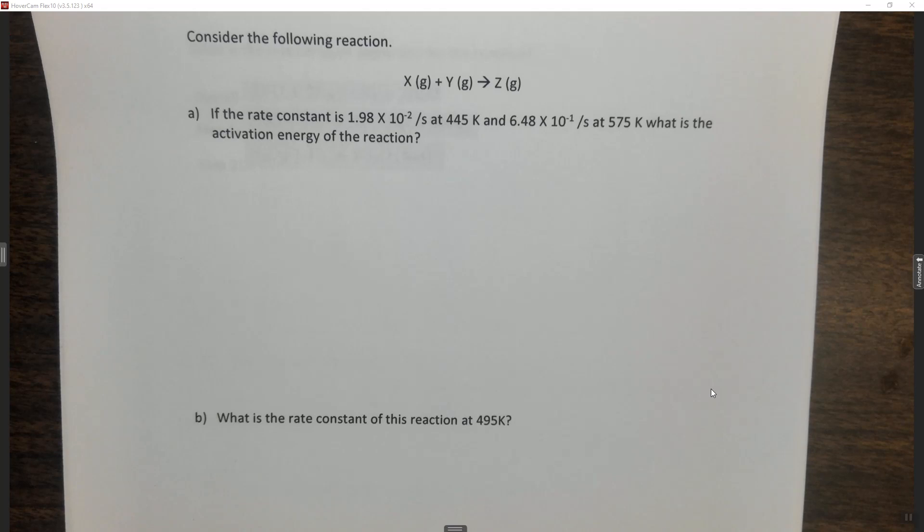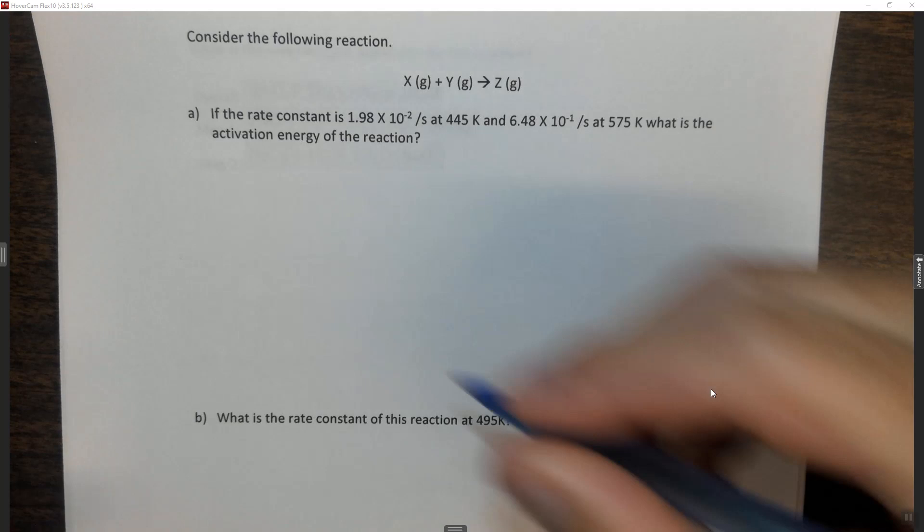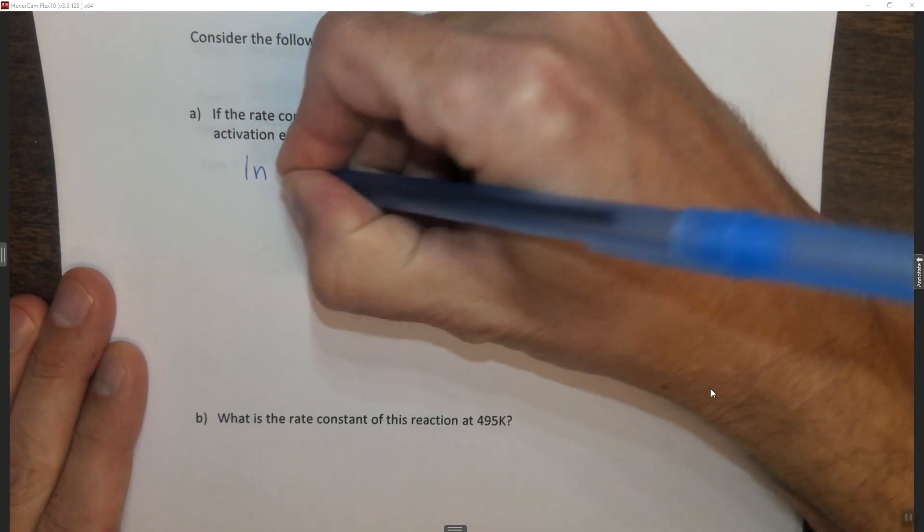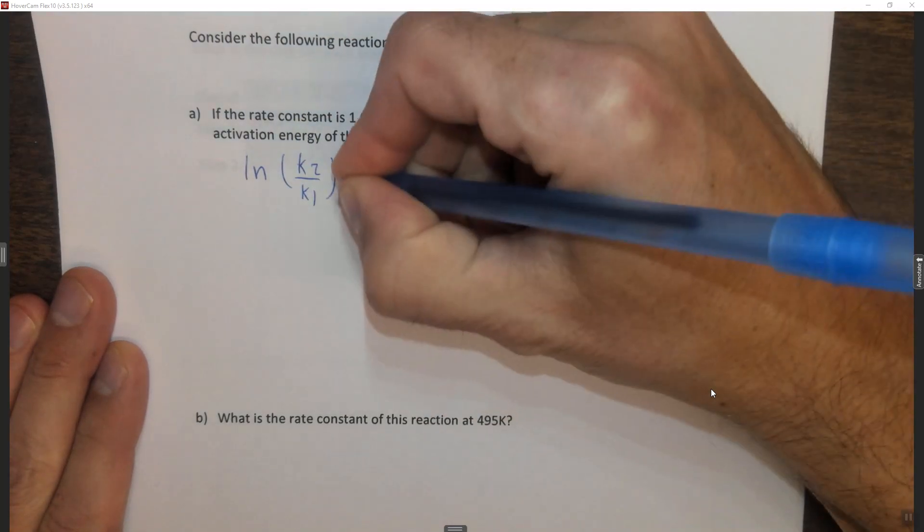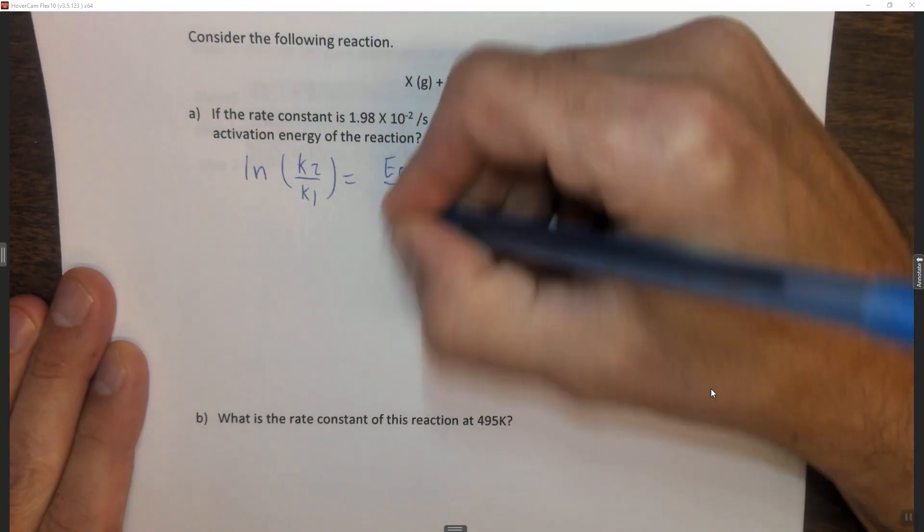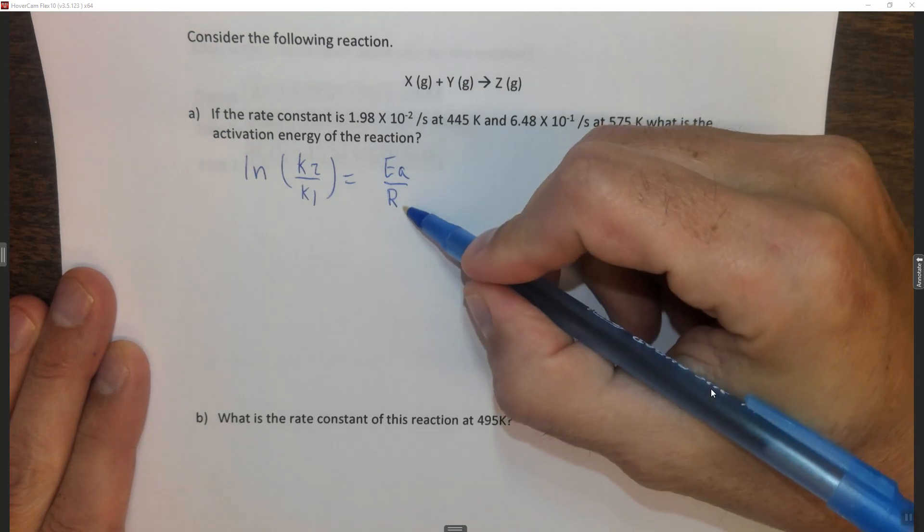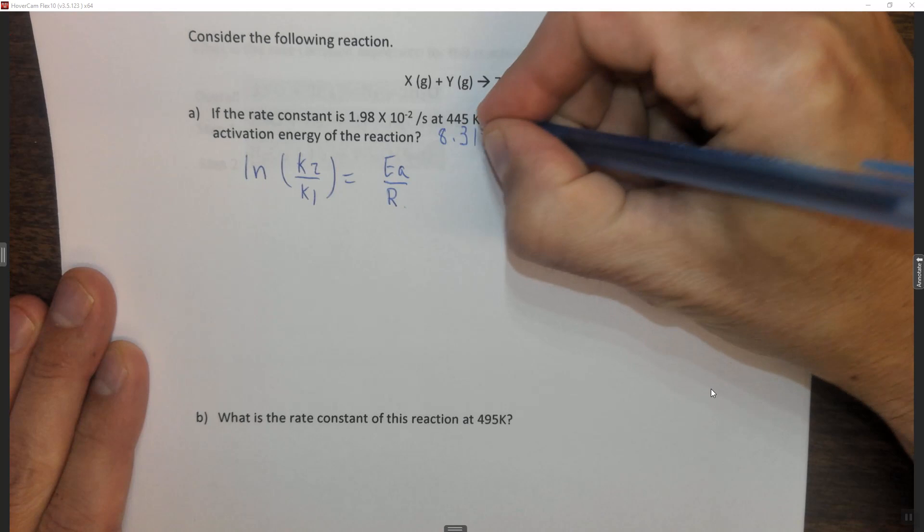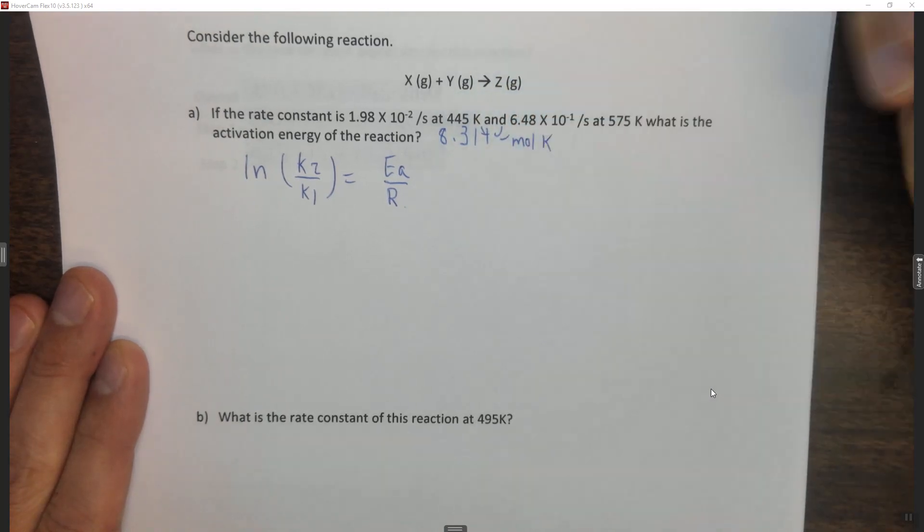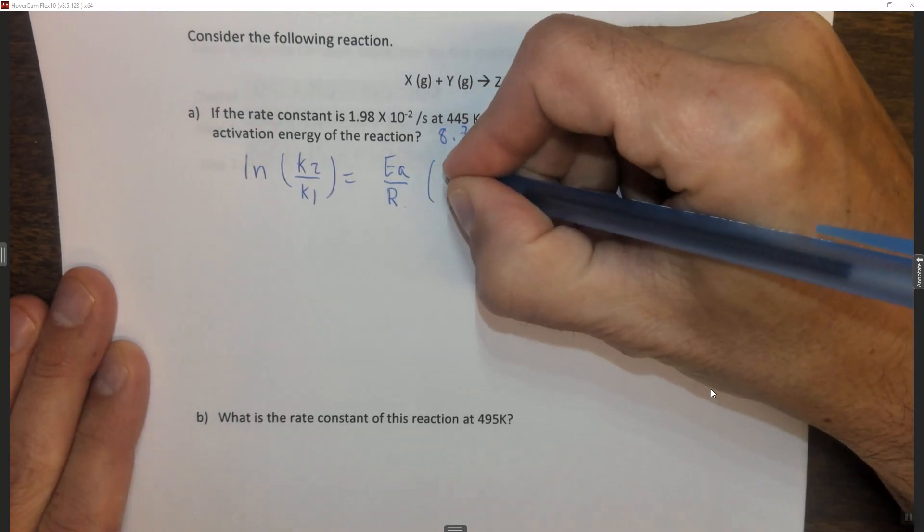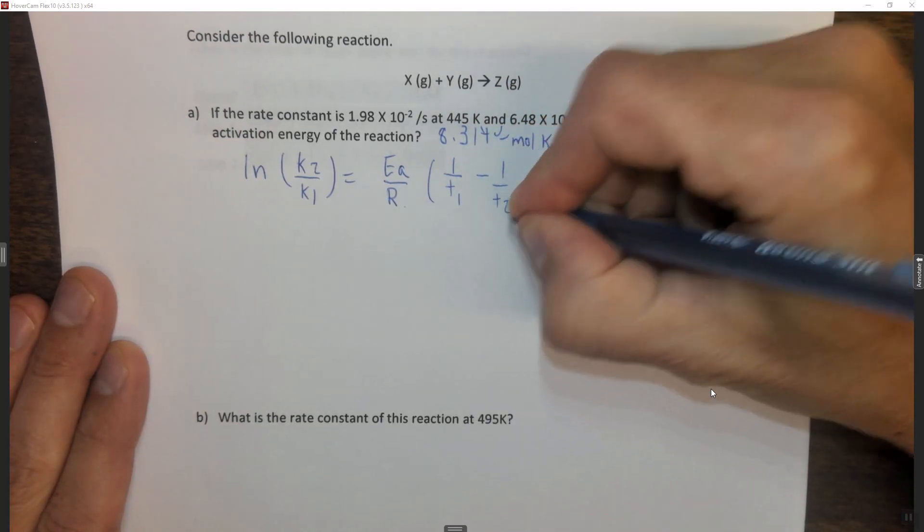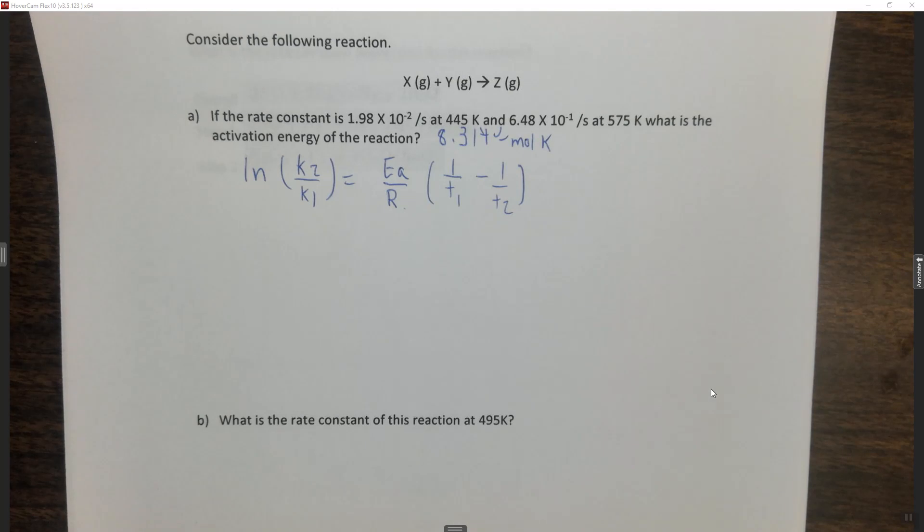In this case, we're looking at the Arrhenius equation, and specifically the two-point form of the Arrhenius equation. Specifically, ln of k2 over k1 equals Ea, the activation energy, over R. This R has to be 8.314 joules per mole K times 1 over T1 minus 1 over T2. So this is the two-point form of the Arrhenius equation.